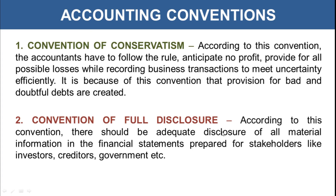The second is the convention of full disclosure. According to this convention, there should be adequate disclosure of all material information in financial statements prepared for stakeholders like investors, creditors, and government. It is necessary to make material and useful information disclosed in front of stakeholders, as they are the ones holding interest in the business and are core to business success and growth.